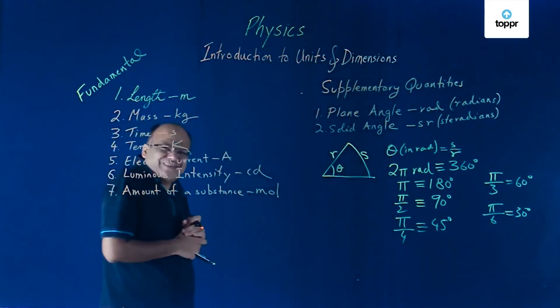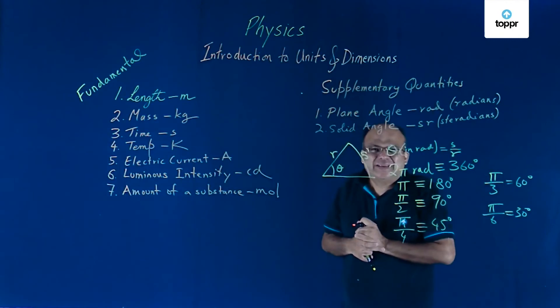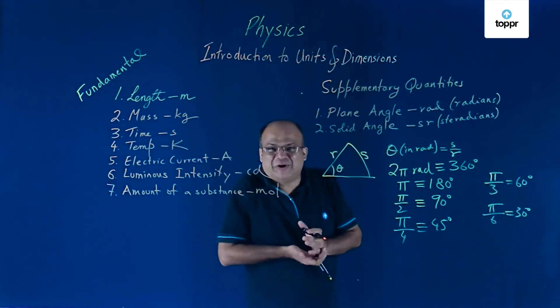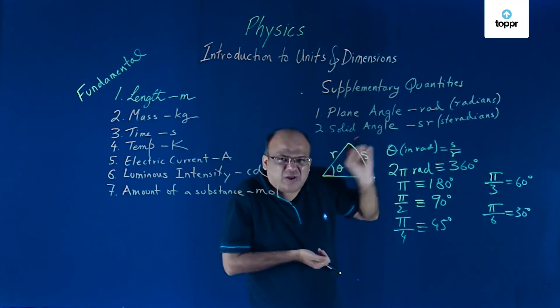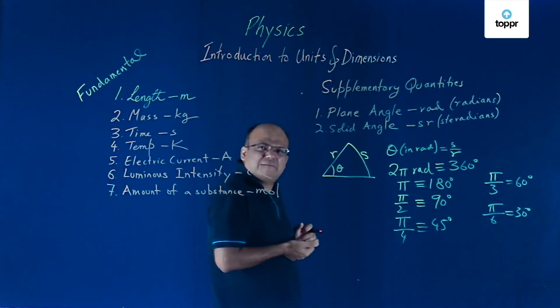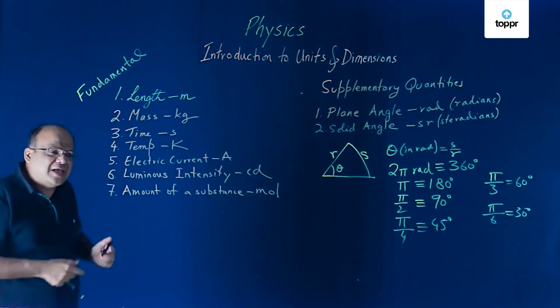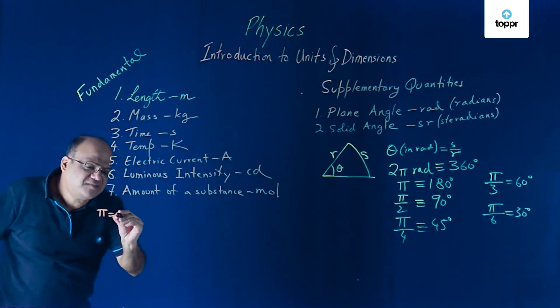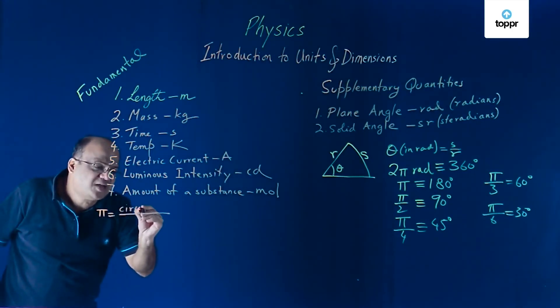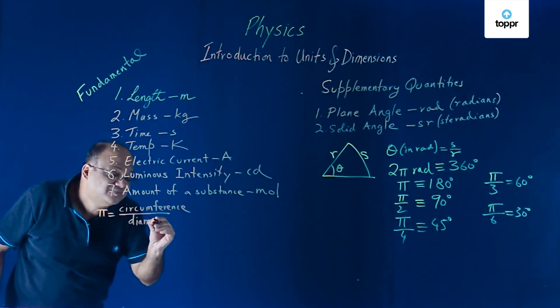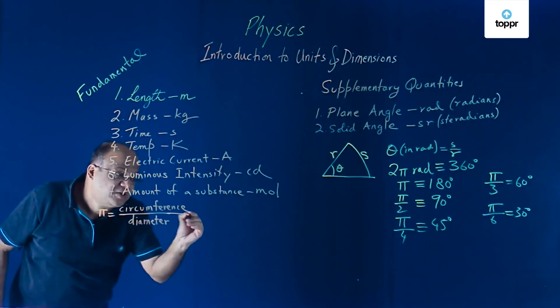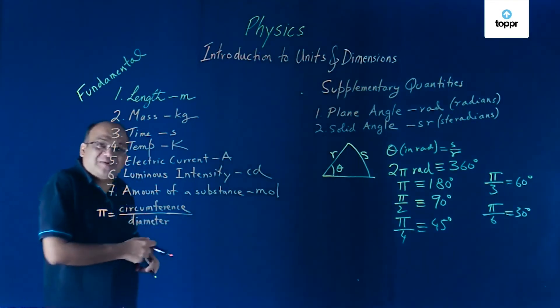What is pi? What is pi? 22 by 7. Why 22 by 7? 3.14. Why 3.14? Why pi has got this value? From where this pi has got? What is pi? Pi is circumference by diameter of any circle. Whatever circle you draw, circumference by diameter will be a constant. And that is called pi. And that happens to be approximately 22 by 7, 3.14 approximately.